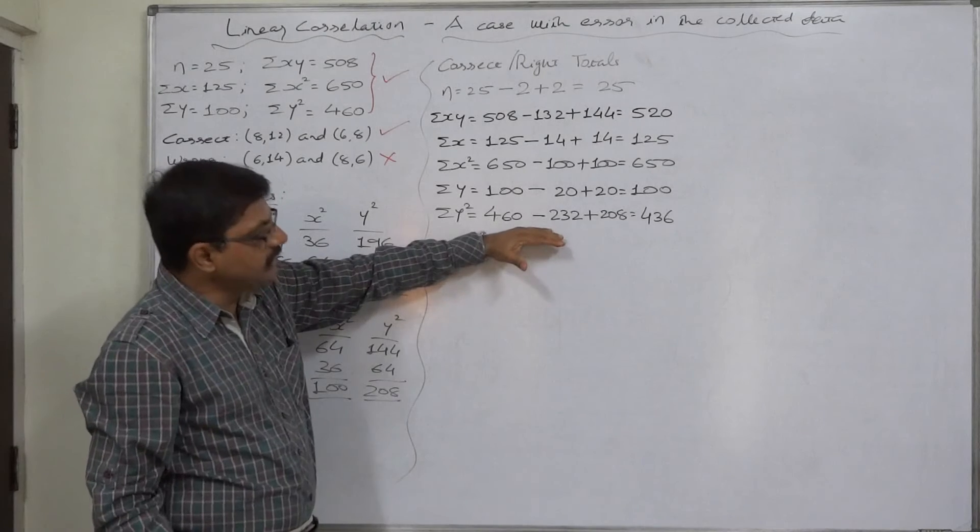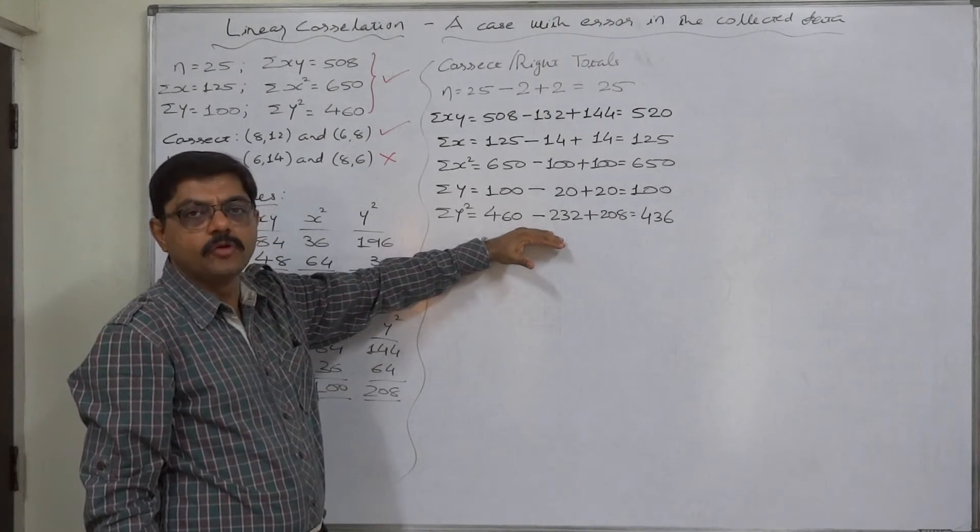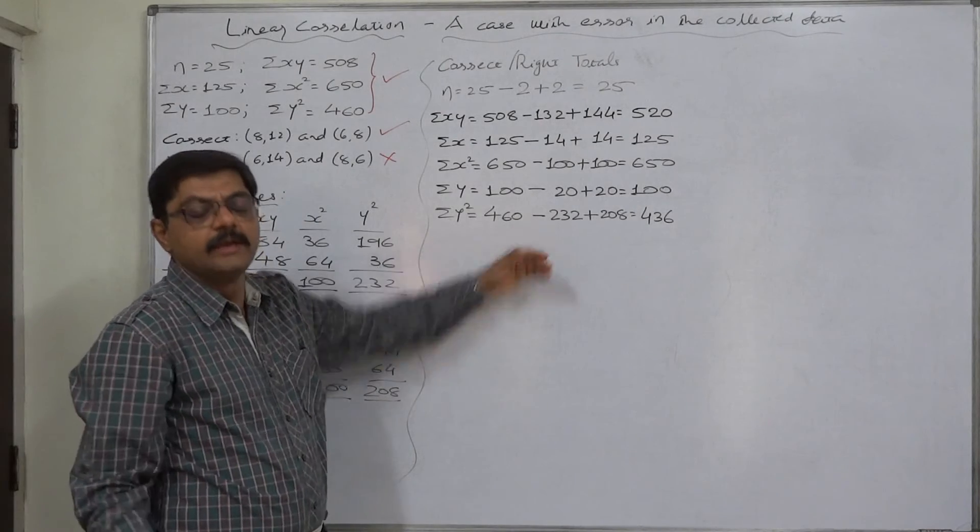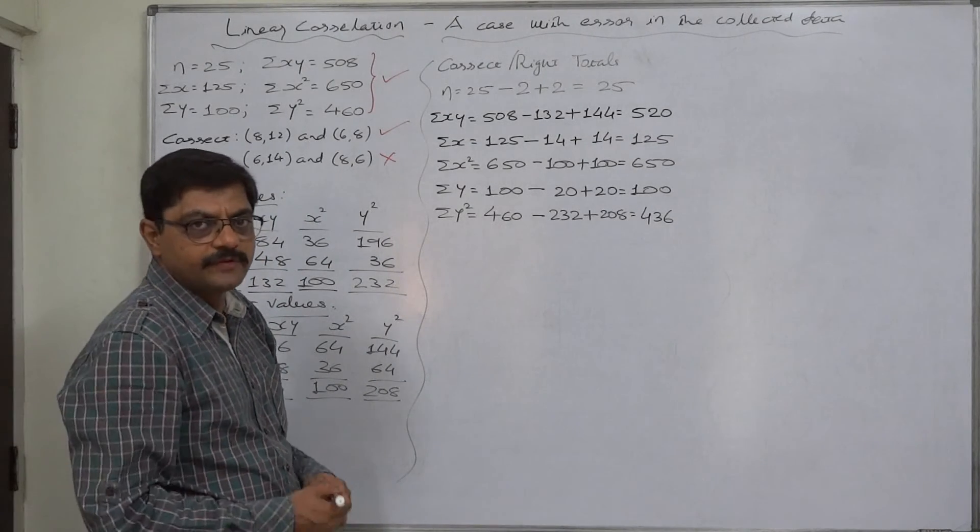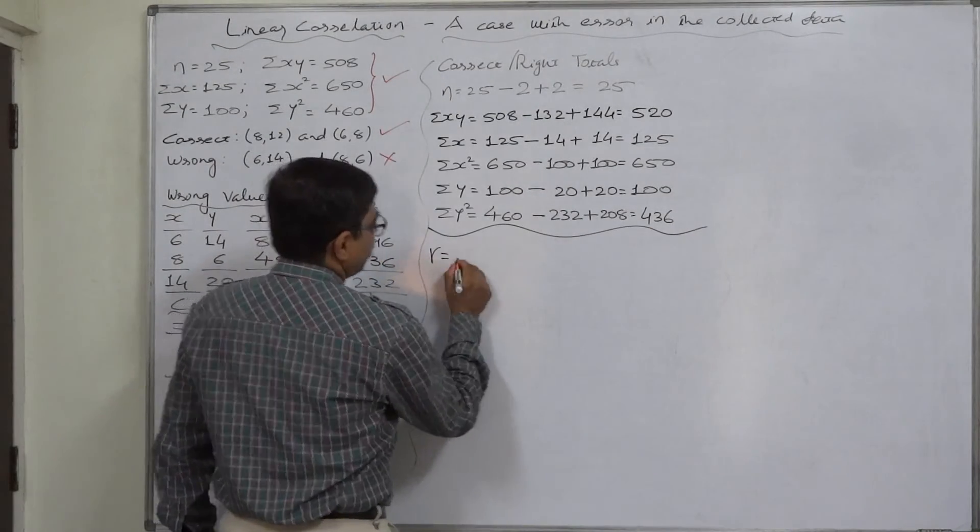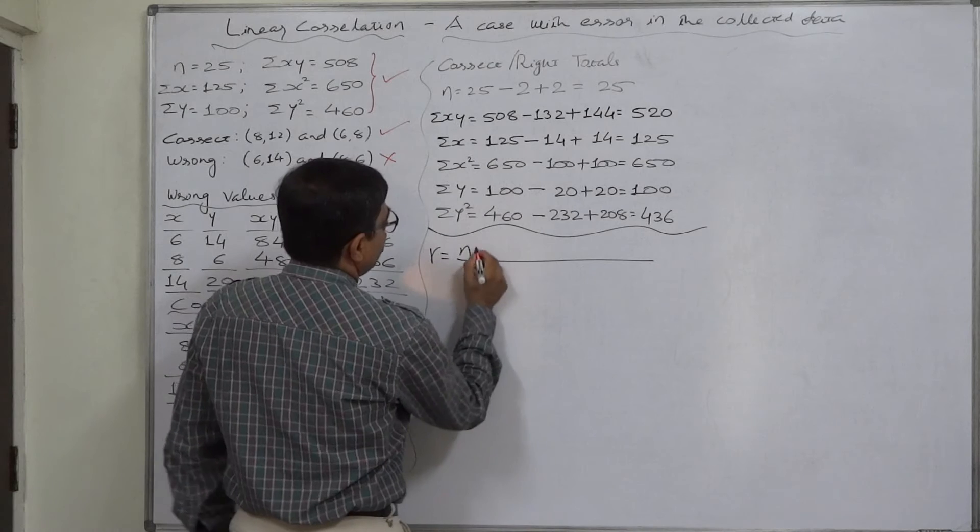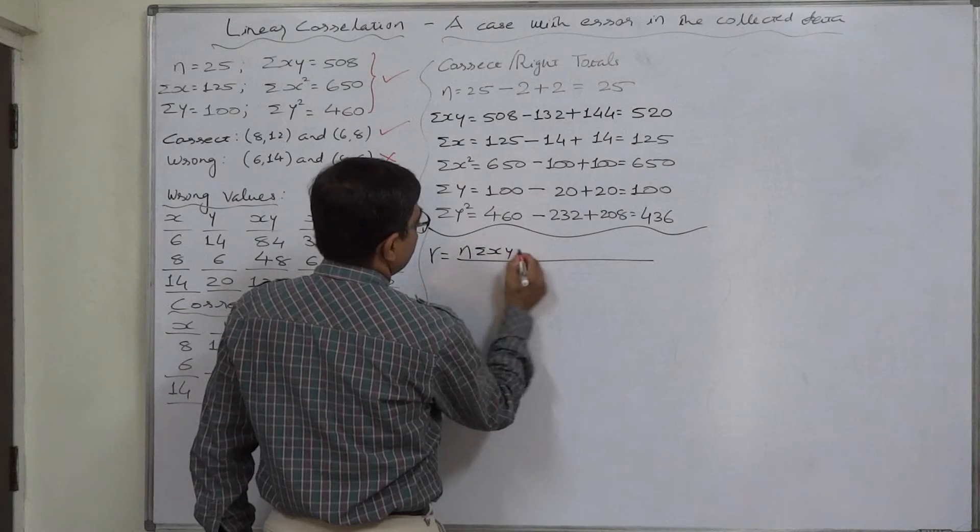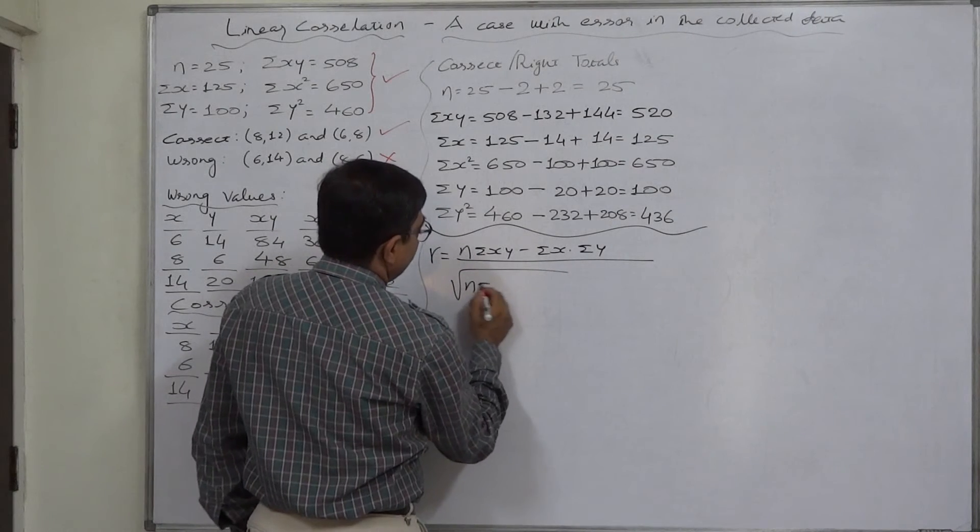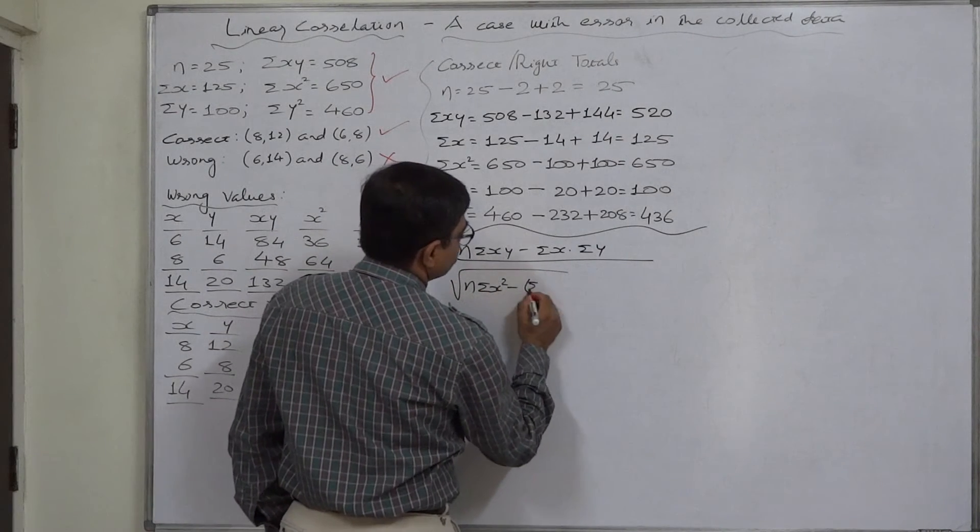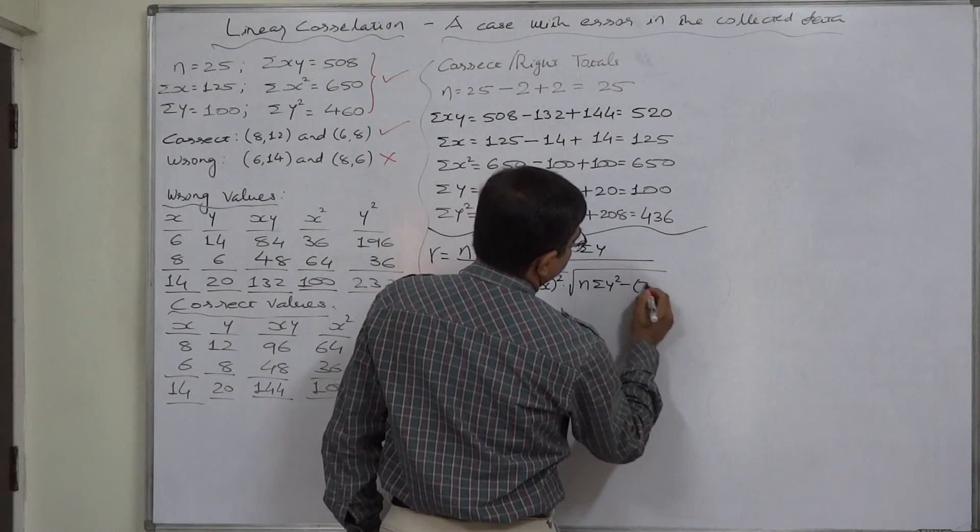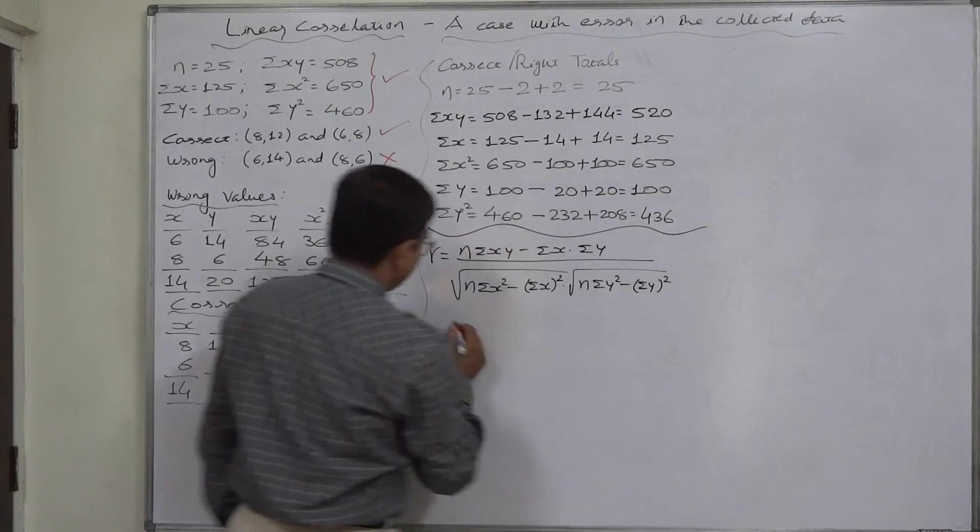If we substitute all these values into the formula of coefficient of correlation, we can have the correct or right value of coefficient of correlation. Let us do it. And we are going to use that versatile formula: nΣxy - ΣxΣy divided by square root of [nΣx² - (Σx)²] times square root of [nΣy² - (Σy)²].